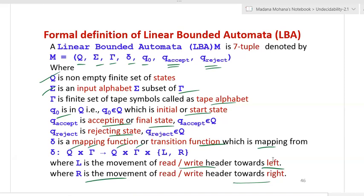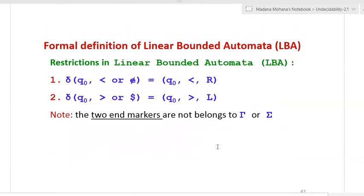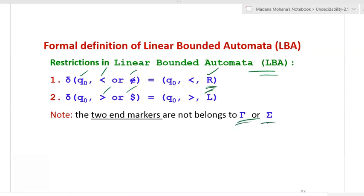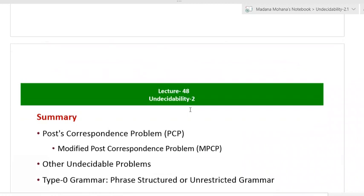These are the additional restrictions of the linear-bounded automaton. The two end markers do not belong to sigma. The read-write header cannot replace the left-end or right-end markers with any other symbol — it simply moves in the allowed direction. The movement of the read-write header lies only between the left-end marker and right-end marker. Remaining definitions are the same as the Turing machine. Linear-bounded automaton is a kind of non-deterministic Turing machine.